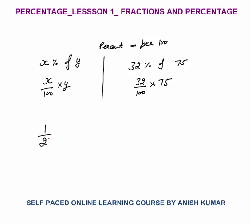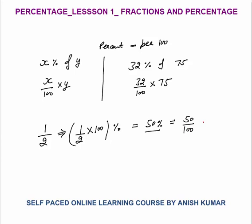For example, if I say 1 by 2, how much percent is that? Whenever you need to convert a fraction or a number into percent, just multiply by 100. So 1 by 2 into 100 percent equals 50 percent. You can verify: to open the percentage, divide by 100 — 50 by 100 equals half. So it comes back to the same thing.